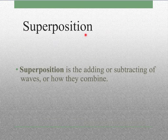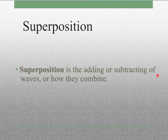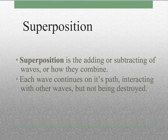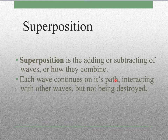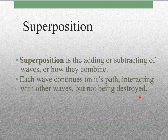Superposition is the effect we get when waves interact — it's how they add or subtract and how they combine. What this means is each wave continues on its own path. You can interact with other waves, but the waves are not destroyed. They don't change or get lost because they interact, but they do interact in certain ways.